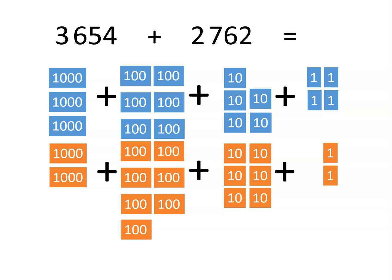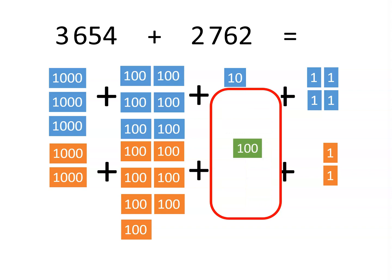Now, when we add these together, it's most helpful to look for groups of 10. Do you see anything we have 10 of? You should see that we have 10 tens. We can trade these 10 tens for 100 because they are equal amounts.